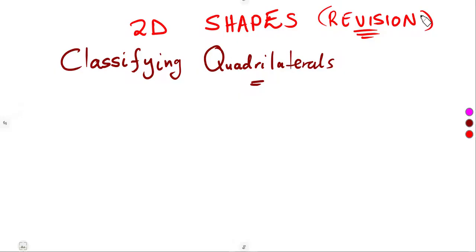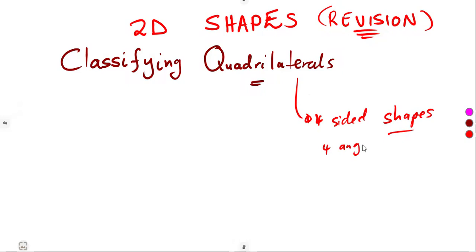As a continuation, we are going to be focusing on the classification of quadrilaterals, which are four-sided shapes with four angles. We managed to cover the two-D shapes concept of quadrilaterals in our grade 8 mathematics. So in this case, we're just going to do a review, a revision, and add one or two properties we may not have mentioned in grade 8.